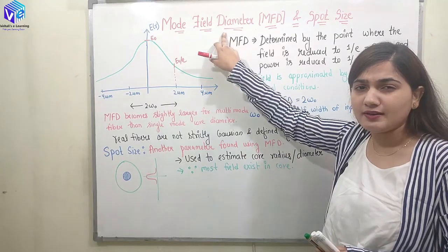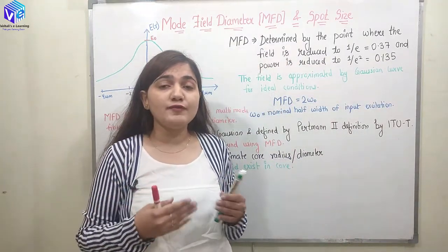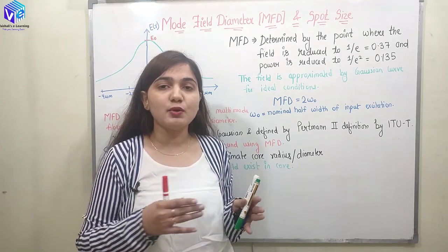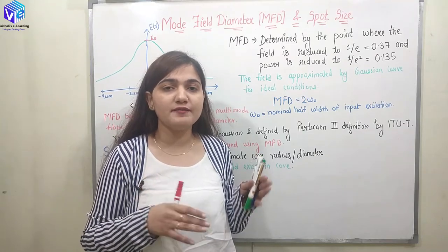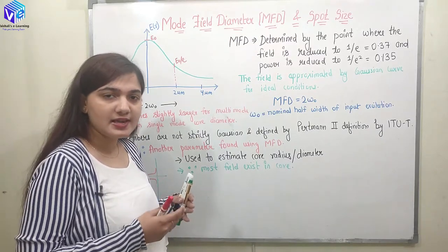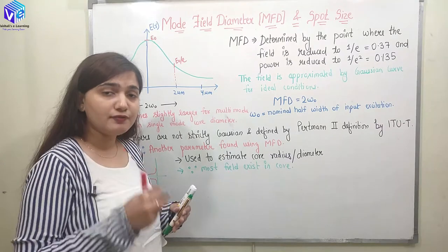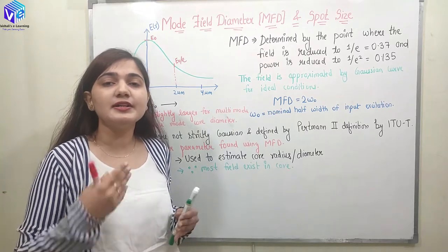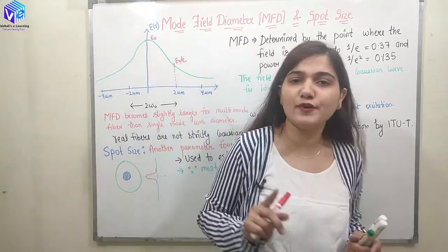As the name suggests, MFD is a diameter which is related to the field. Whenever I want to find out the actual diameter of the field including the evanescent field — the field that is propagating inside the cladding — I will be using the term MFD. The core carries some field inside it, but some evanescent field is also present in the cladding. We have to find out the diameter including the evanescent field to get a more accurate electrical representation. So MFD gives me a more accurate representation of the electric field.